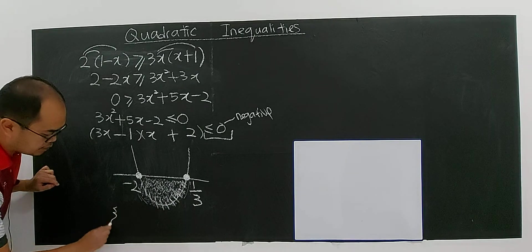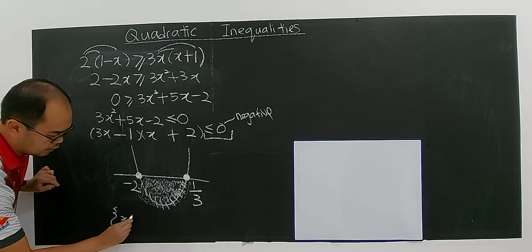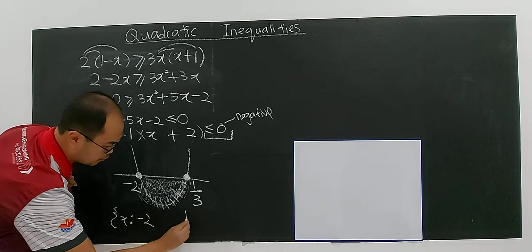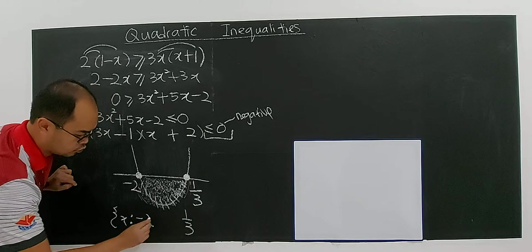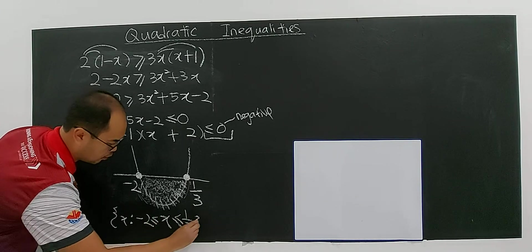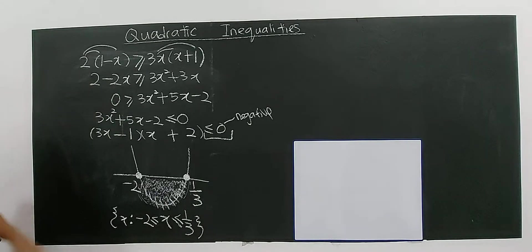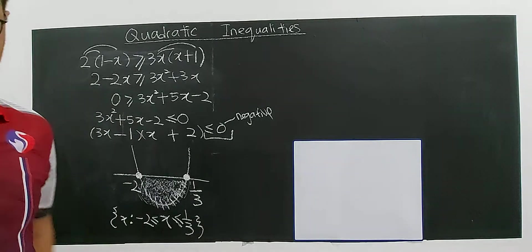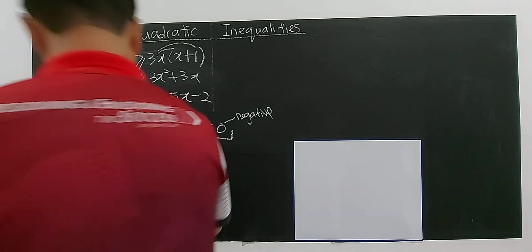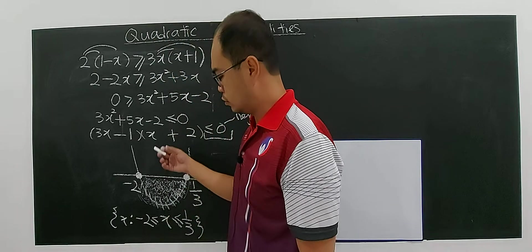the solution will be you can write in set notation where the answer will be negative 2 in between negative 2 and 1 over 3. Include negative 2 and include 1 over 3. This will be the solution for this quadratic inequality. You have to understand the meaning of solution.